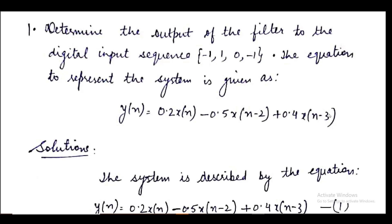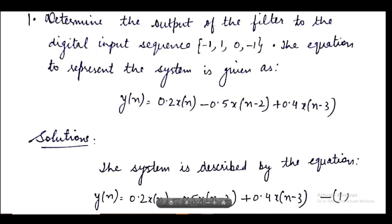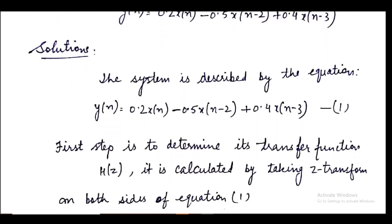We are not given the impulse response directly; we need to find the output for this particular input. Our first step is to determine the transfer function H(z). We can do this in two ways: by substituting x(n) = δ(n) to find h(n) and then H(z), or by directly taking the Z-transform of the system equation. We'll use the second method — taking the Z-transform on both sides.